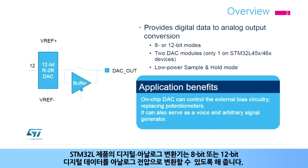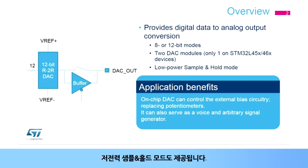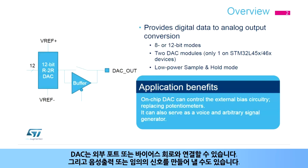The digital to analog converter on STM32L products ensures the conversion of 8- or 12-bit digital data to the analog voltage. Two DAC modules are embedded in the STM32L4 devices, except on STM32L45X46X devices, where only one DAC is implemented. A low-power sample and hold mode is also integrated. The DAC can interface with external POTS or BIAS circuitry, and it can also create voice and arbitrary signals.